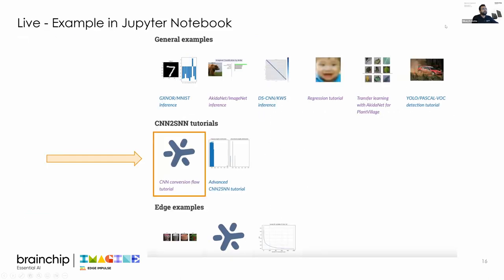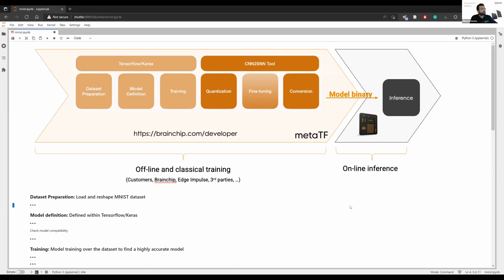Now I'd like to dive into the live example, which is also available on MetaTF, but I've added a few more things for this workshop. I'm sharing my screen — it's running on a live chip notebook. The core of MetaTF is TensorFlow. The light orange elements represent traditional steps you do today: prepare datasets, define the model, and train to optimize it — all in floating point.